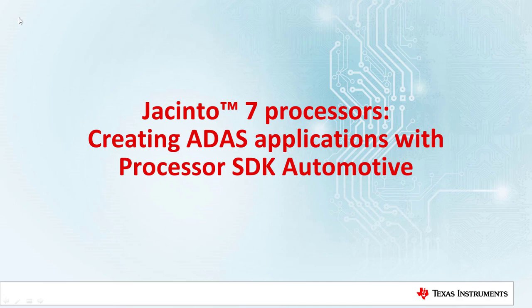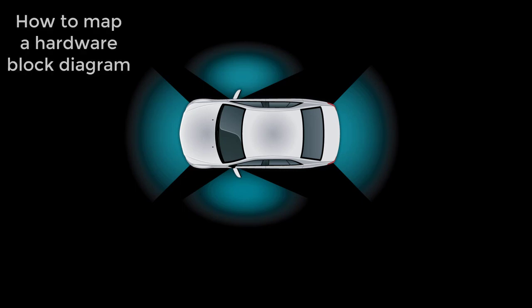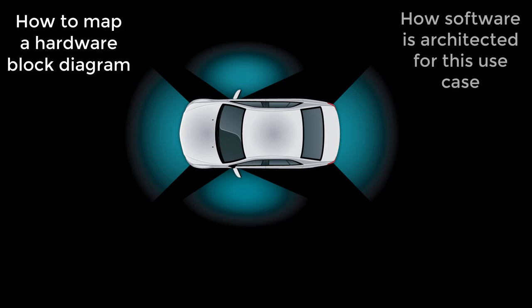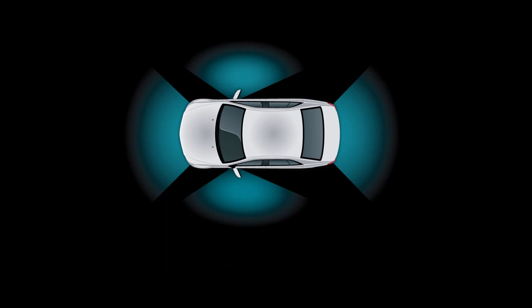Hello and welcome to Jacinto 7 software training. In this session, you will learn how to create ADAS applications using the Processor SDK Automotive for Jacinto 7. Specifically, we will take a use case of Surround View Park Assist as a case study. You will learn how to map a hardware block diagram to Jacinto 7 SoC, how software is architected to implement such a use case, and how to build and run the representative Surround View Park Assist demos on TI EVM using the Processor SDK Automotive. Note that Surround View Park Assist is just one example of the many ADAS applications that can be implemented on Jacinto 7 devices.